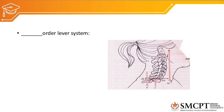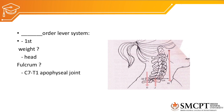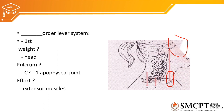The cervical vertebral column follows a first-order lever system. The weight is the head or skull, the fulcrum is the joint — for example the C7-T1 apophysial joint — and the effort is contraction by the muscles. The effort is provided by the extension muscles. Because the fulcrum is between the weight and the effort, it is a first-order lever.